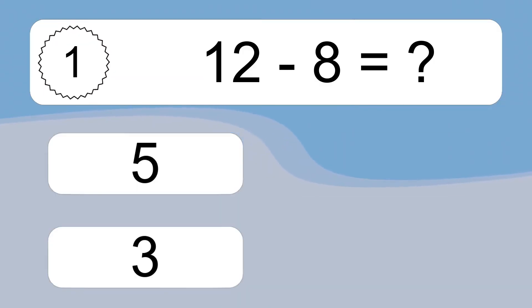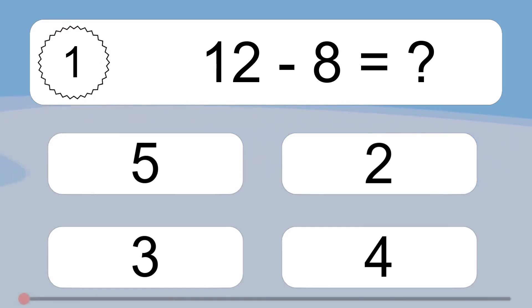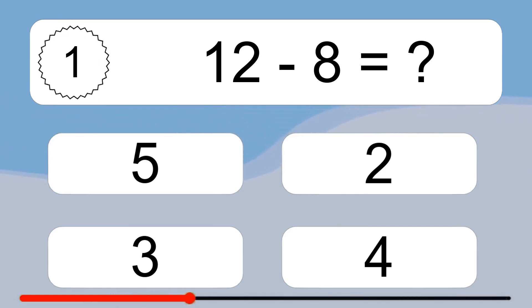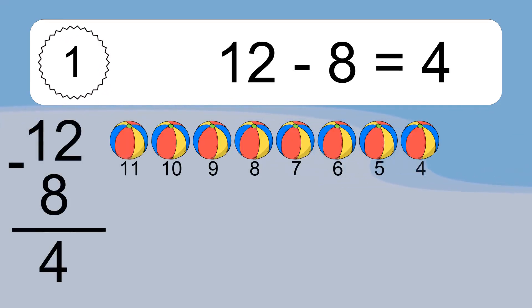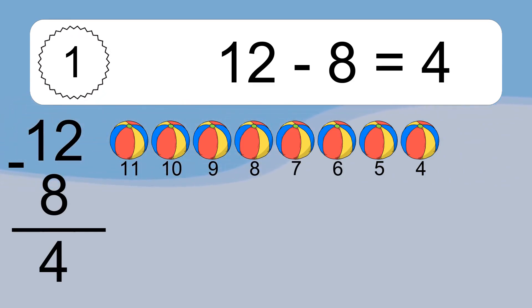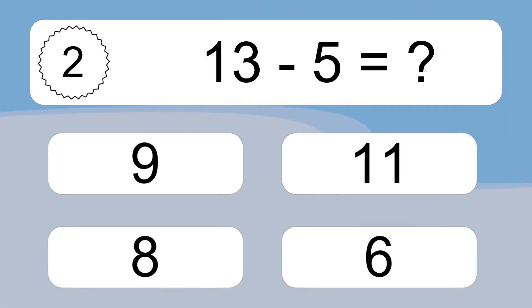12 minus 8 equals what? 12 minus 8 equals 4. Let's count it: 11, 10, 9, 8, 7, 6, 5, 4.